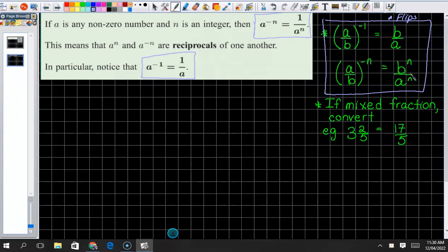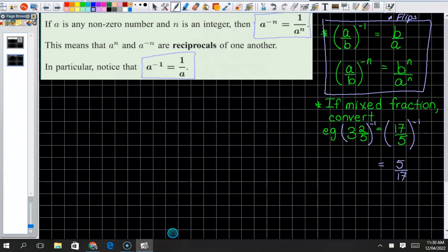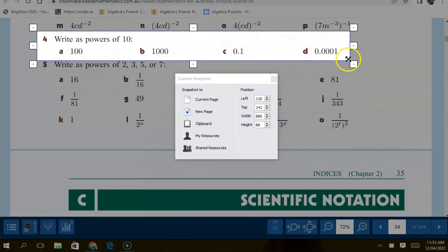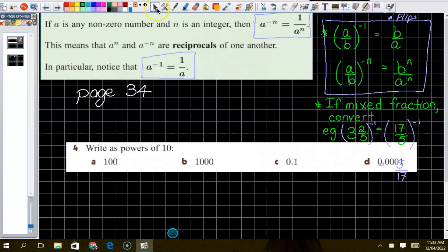If you have a mixed fraction, so you've got three and two-fifths to the minus one, you first have to change it to an improper fraction, top heavy, and then you can flip the fraction. Do you need to write yourself little notes about this? We're going to look at question four and five because that leads into the next bit we're doing. Can we write these as powers of 10?